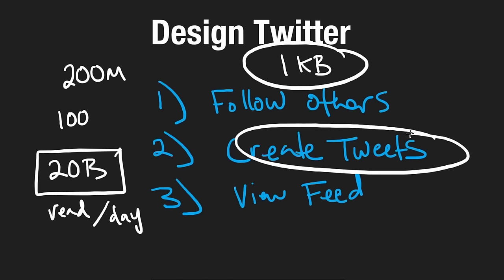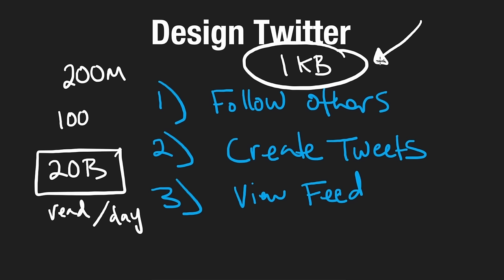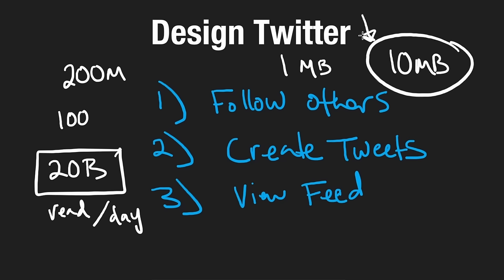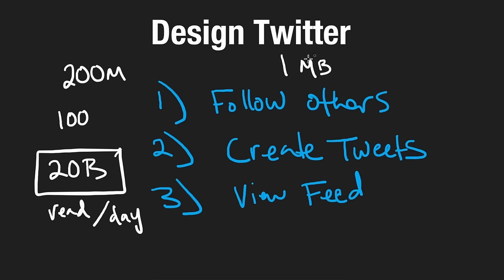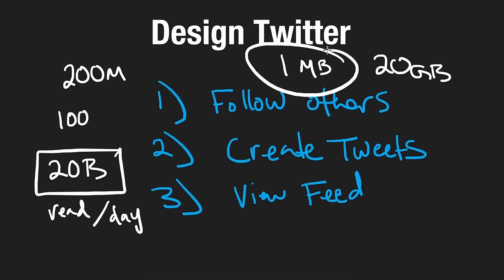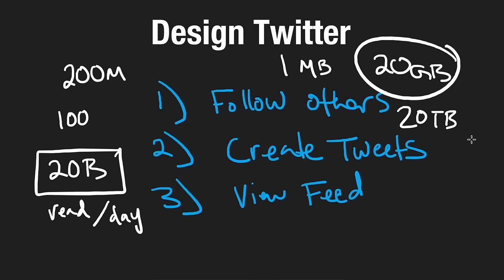Some tweets contain images and videos, so on average the size will be higher. Rather than spending a lot of time on the math, let's average up to a megabyte per tweet — maybe videos average 10 megabytes if they're longer, but most tweets are around a kilobyte, so a megabyte is a fair average. So with 20 billion tweet reads at a megabyte each: 20 billion bytes is 20 gigabytes, multiply by a million for megabytes, and we get 20 petabytes of data read per day.